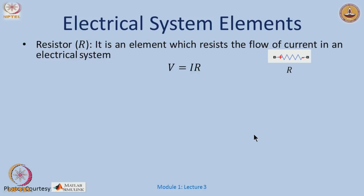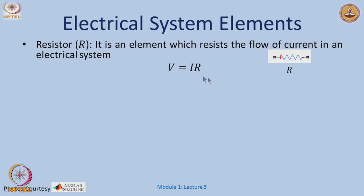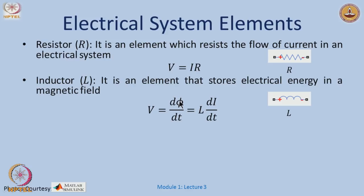A resistor is an element which resists the flow of current, and Ohm's law V = IR models a simple linear resistor. For an inductor, the voltage across it is given by dφ/dt, and when flux is linearly related to current — φ = LI — we have V = L·di/dt. So φ is proportional to the current, and in the linear case φ = L·I, giving us V = L·di/dt describing a linear inductor.